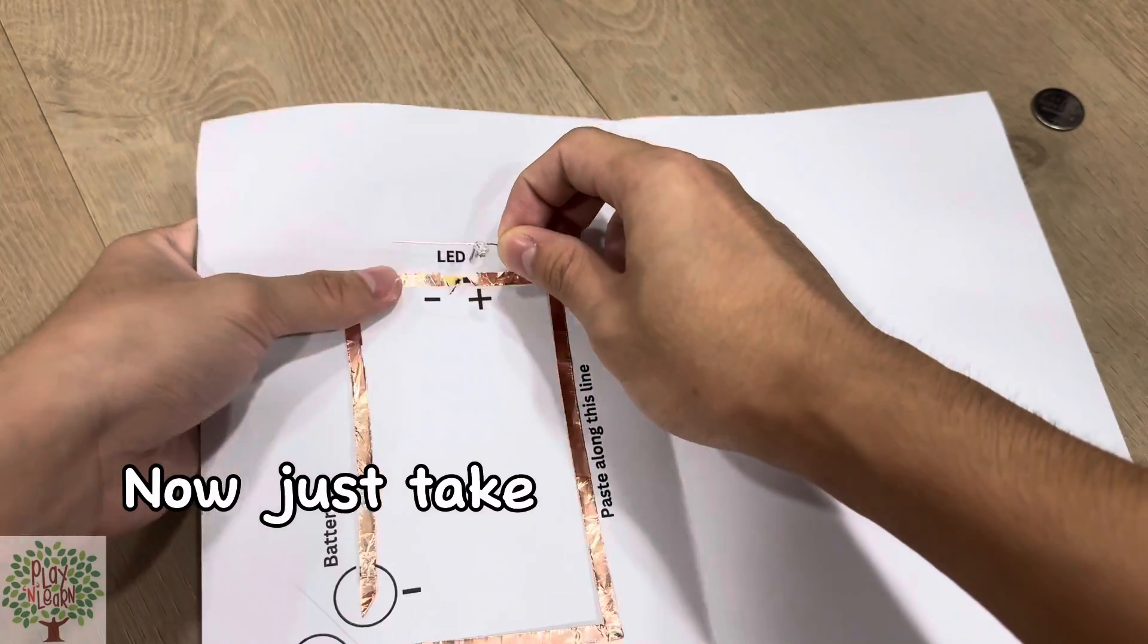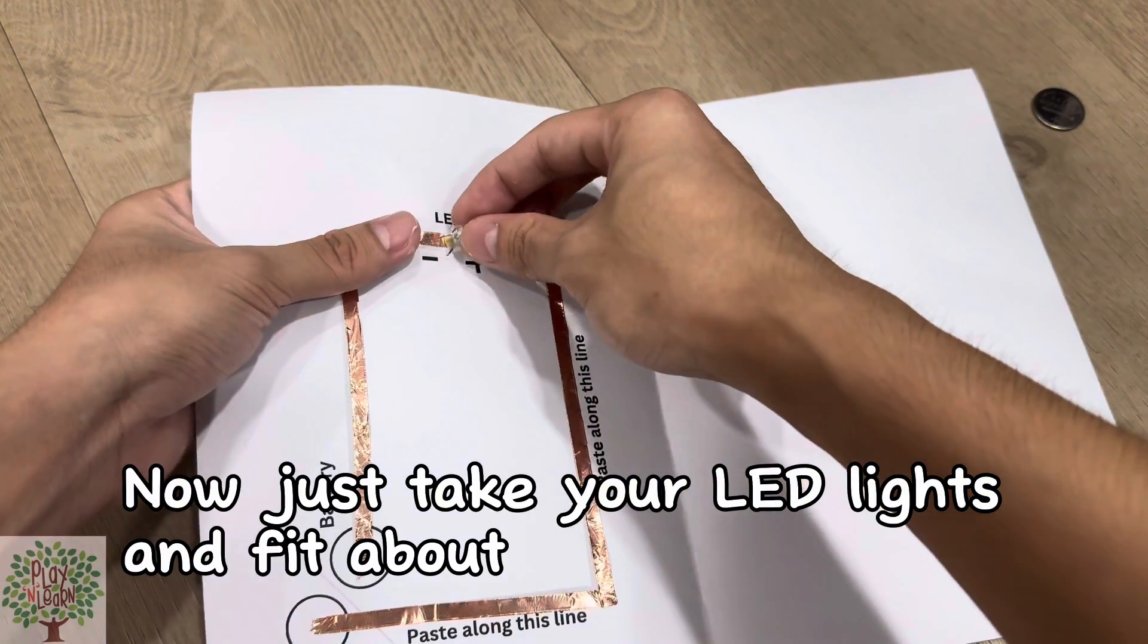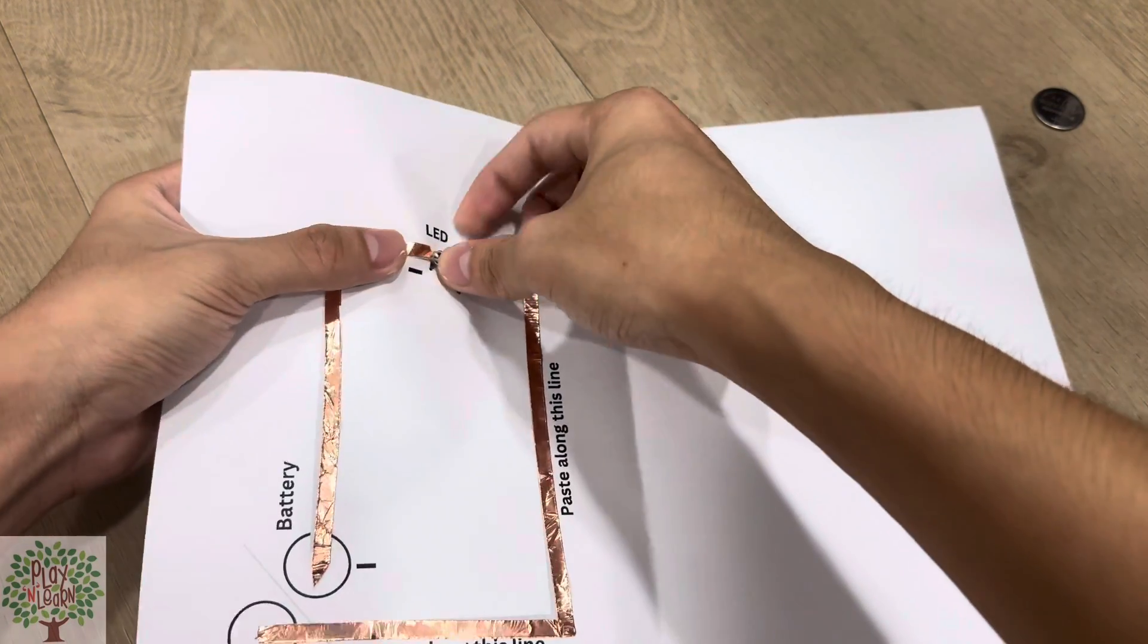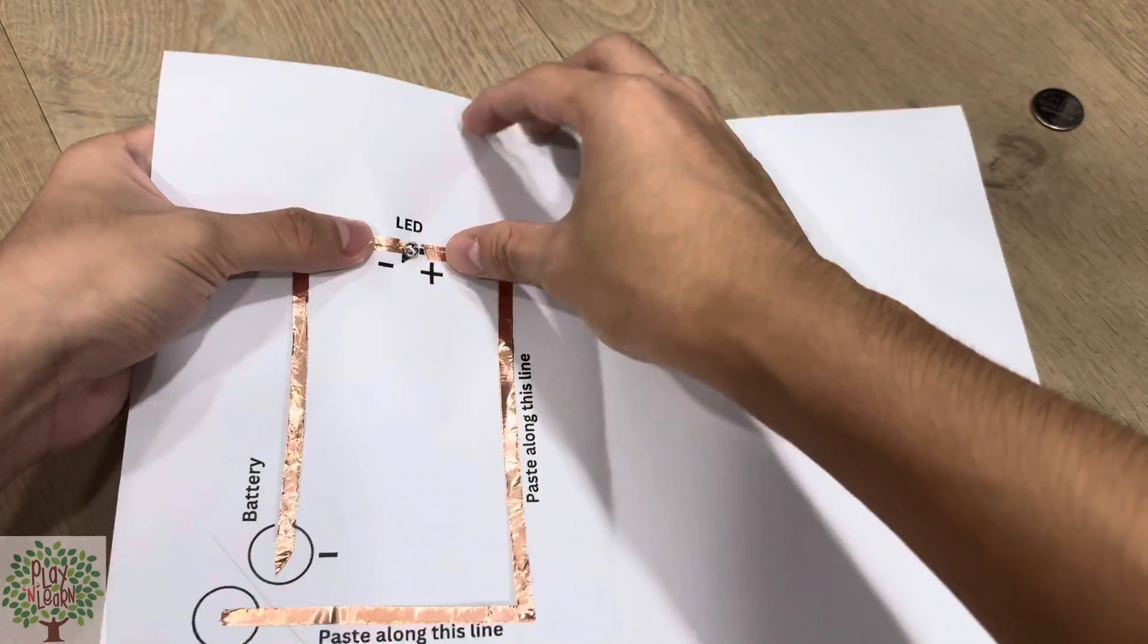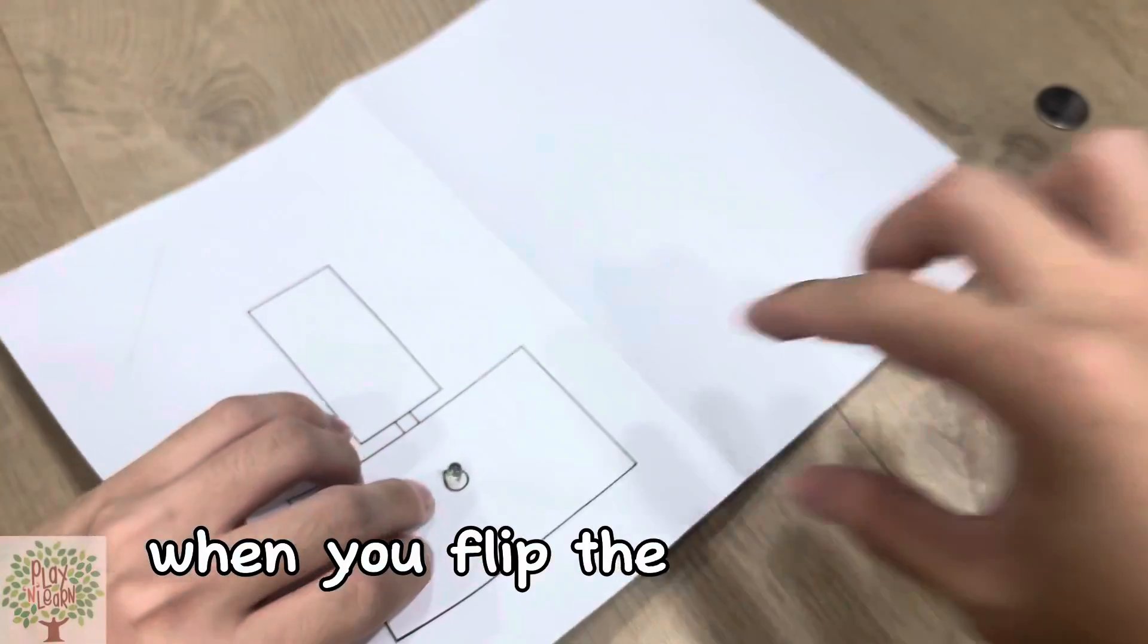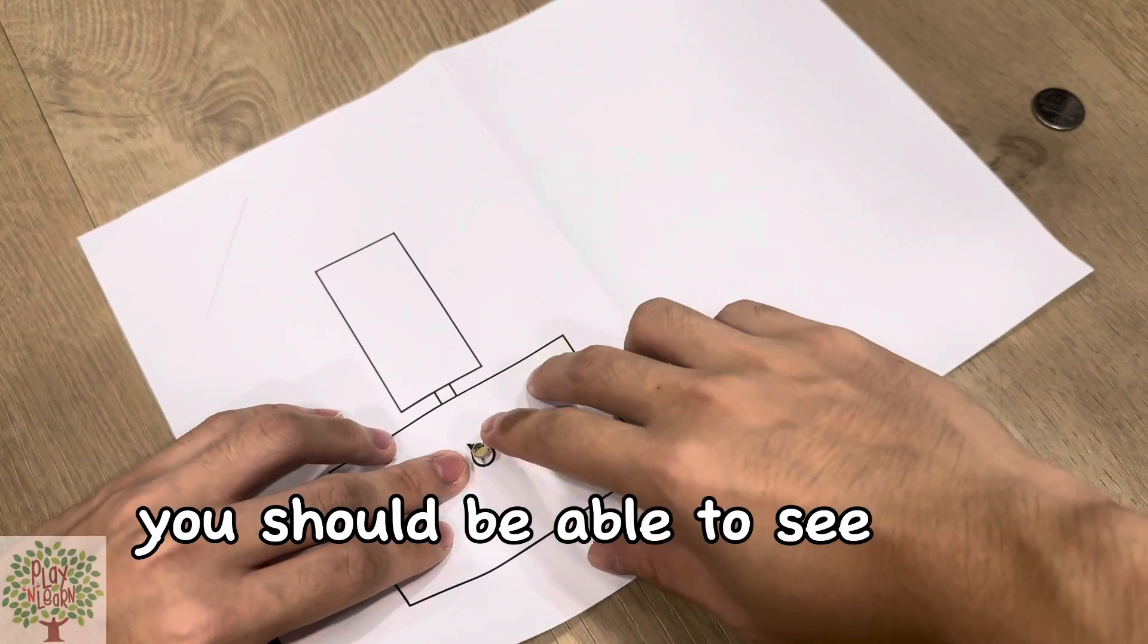Now just take your LED light and fit the bulb right through the paper. When you flip the paper over, you should be able to see the LED light bulb.